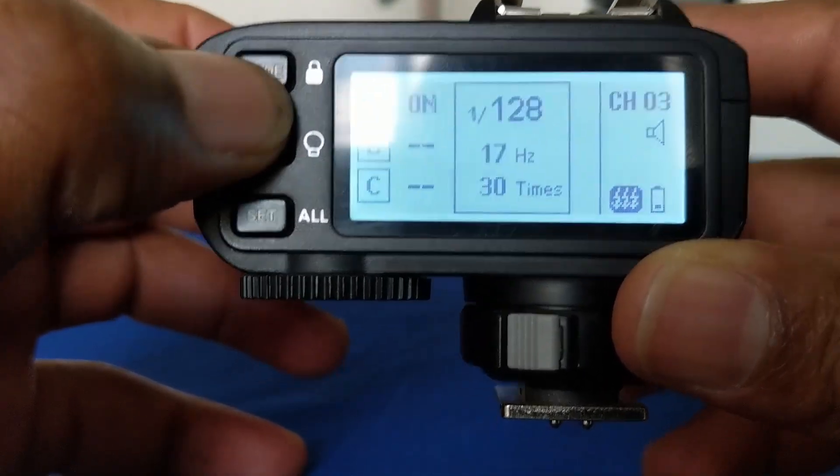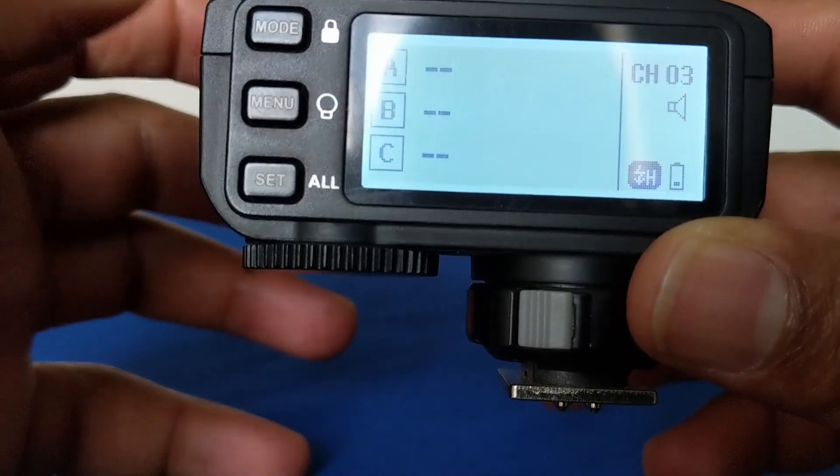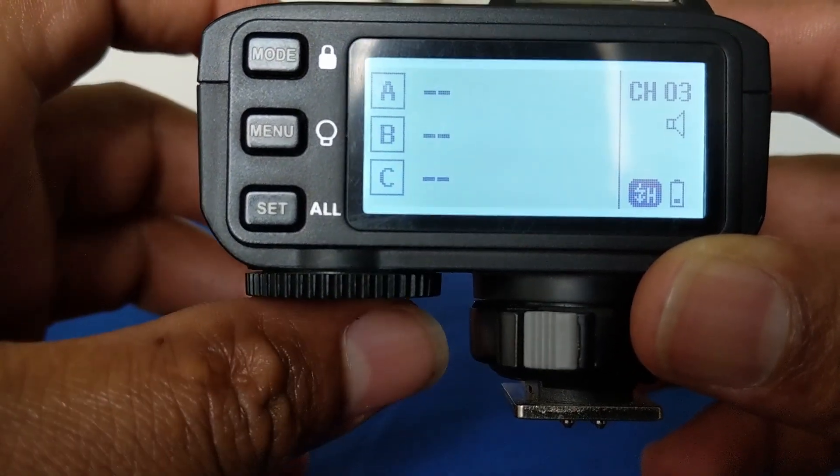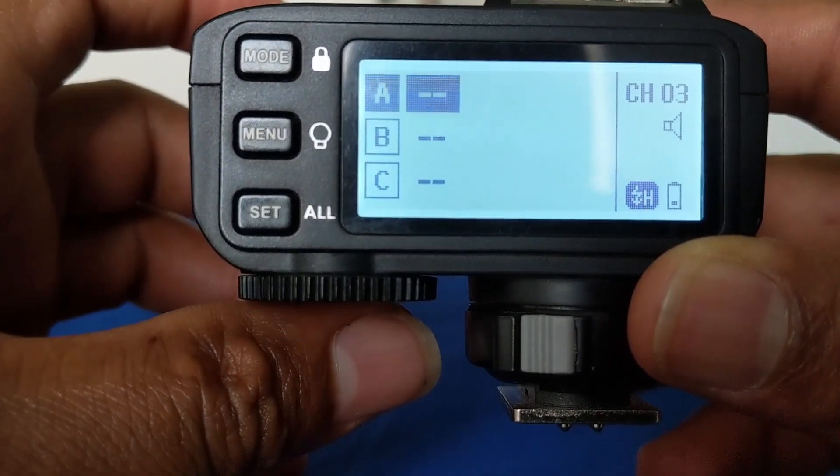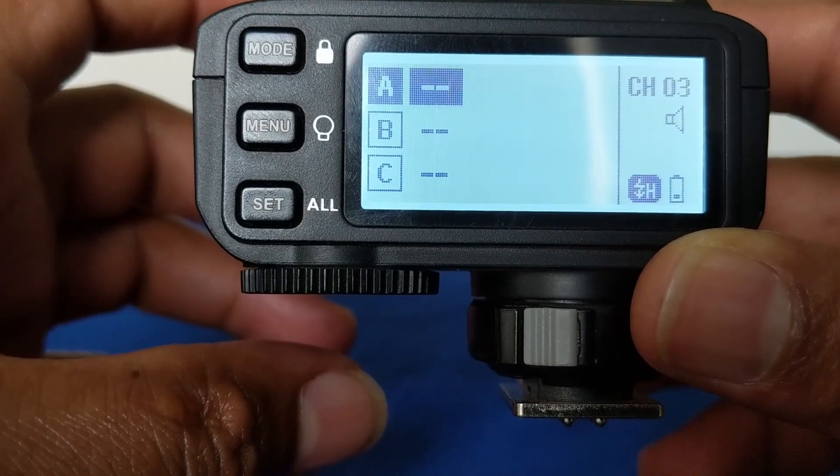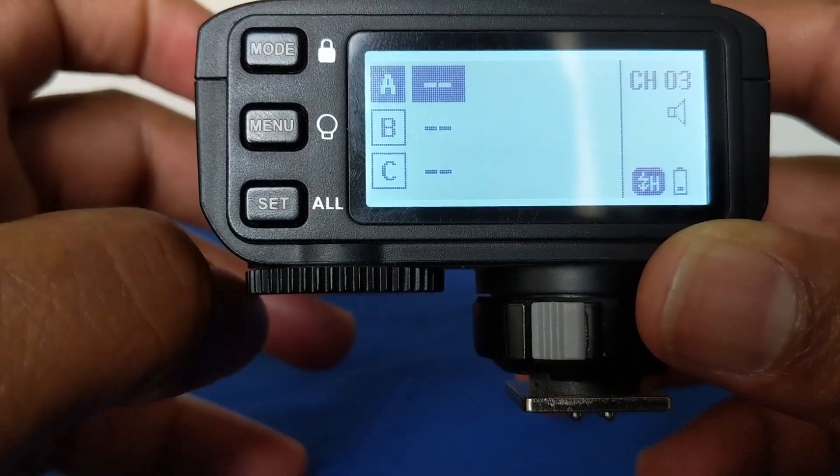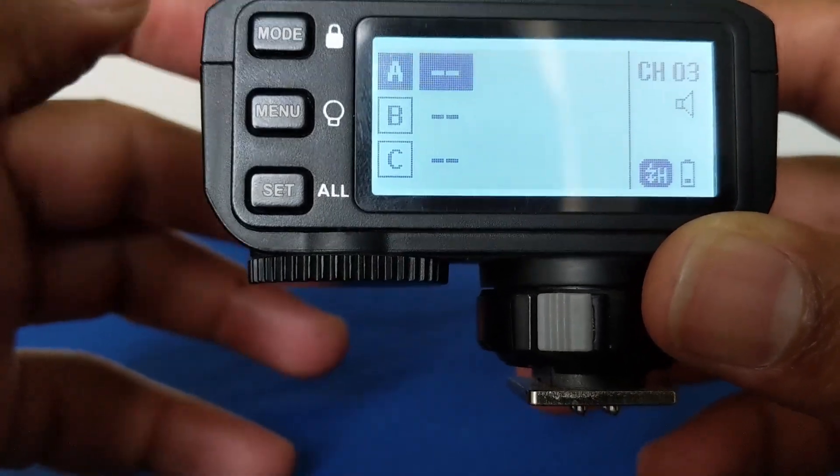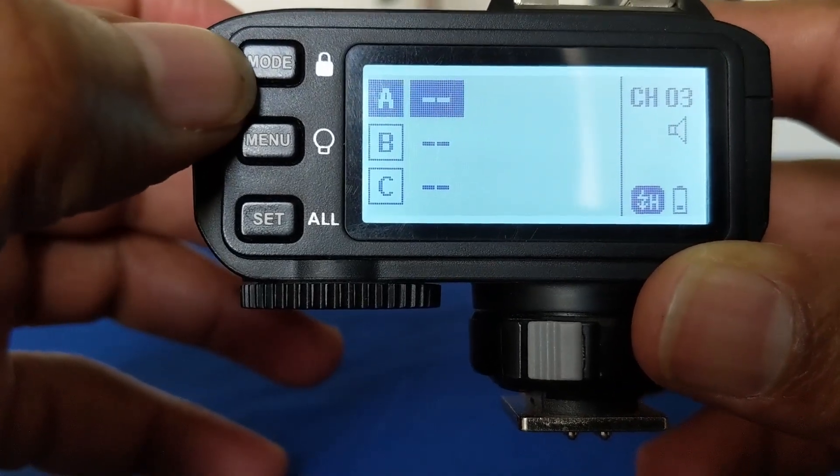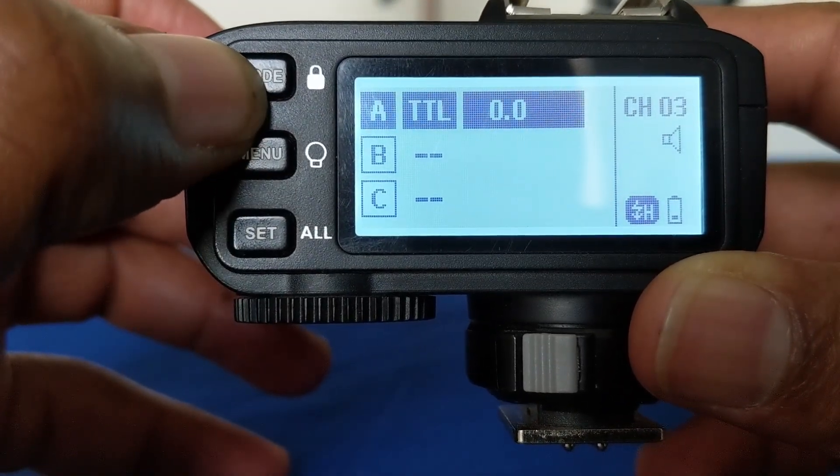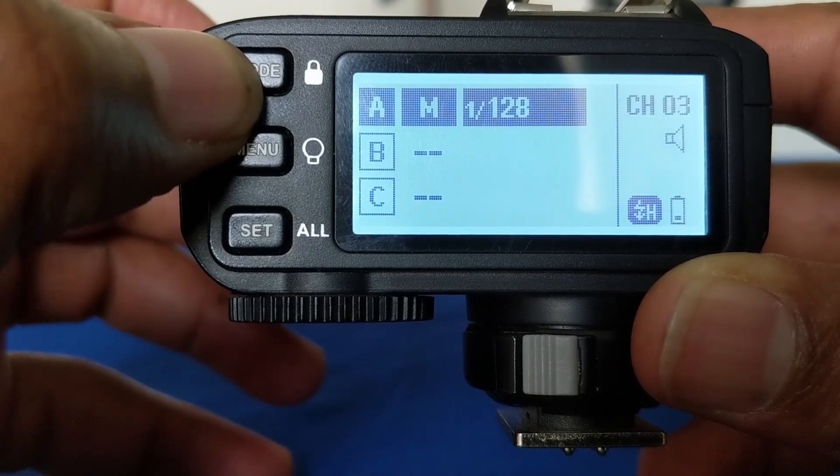But then when you have, for instance, a group highlighted, the mode button will toggle between OFF, TTL, and Manual.